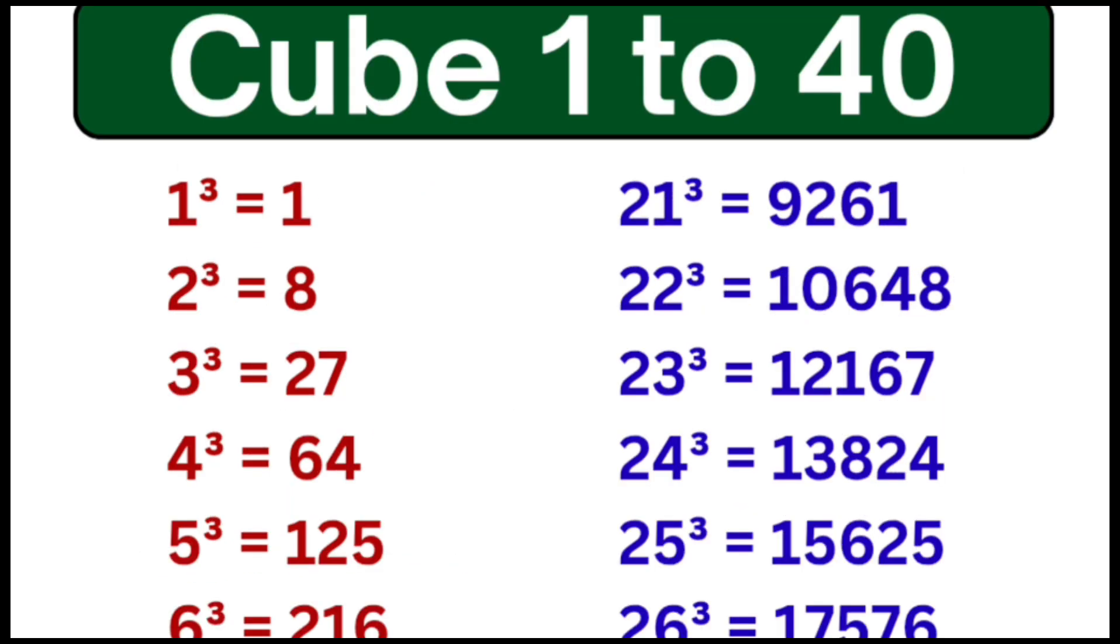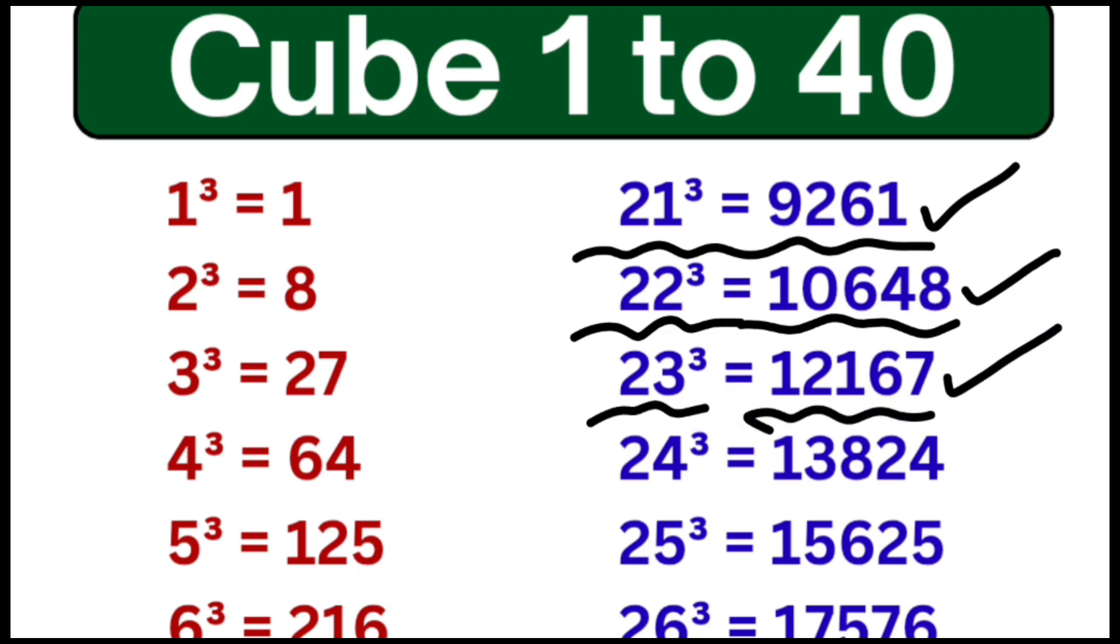Cube of 21 is equal to 9261, cube of 22 is equal to 10648, cube of 23 is equal to 12167, cube of 24 is equal to 13824, cube of 25 is equal to 15625.